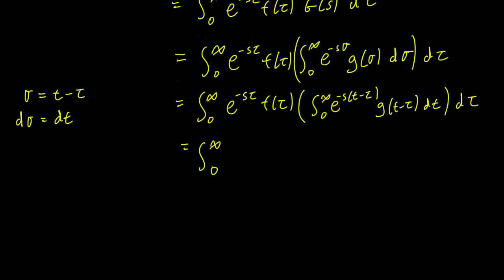So one thing we can do is that we can expand this out a little bit. So we have e^(+sτ) times e^(-st), g(t-τ) dt dτ.